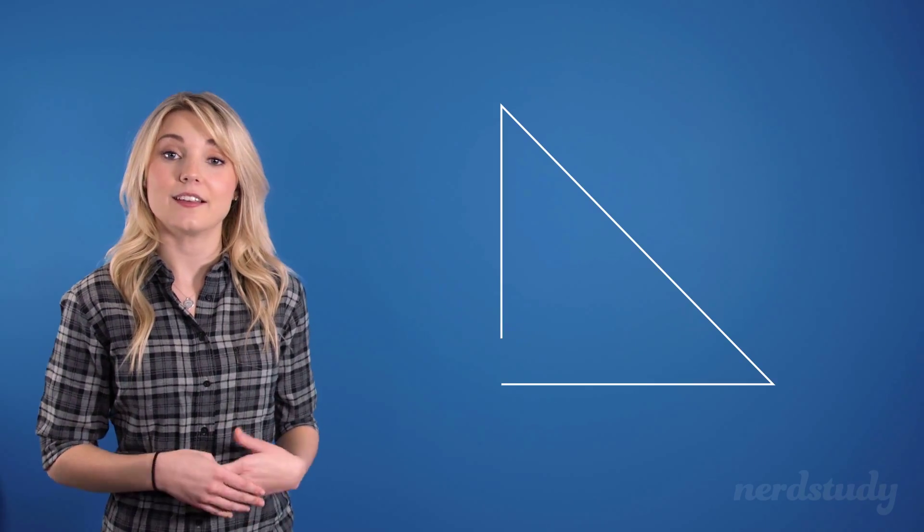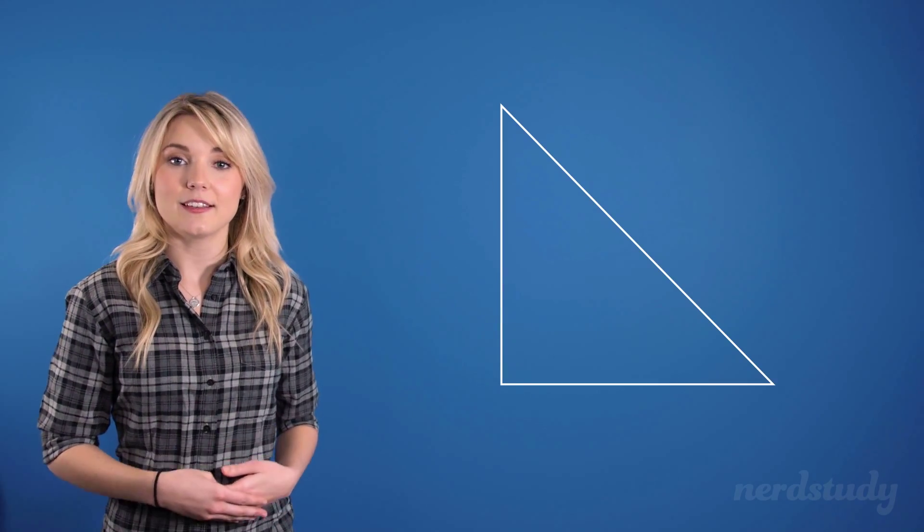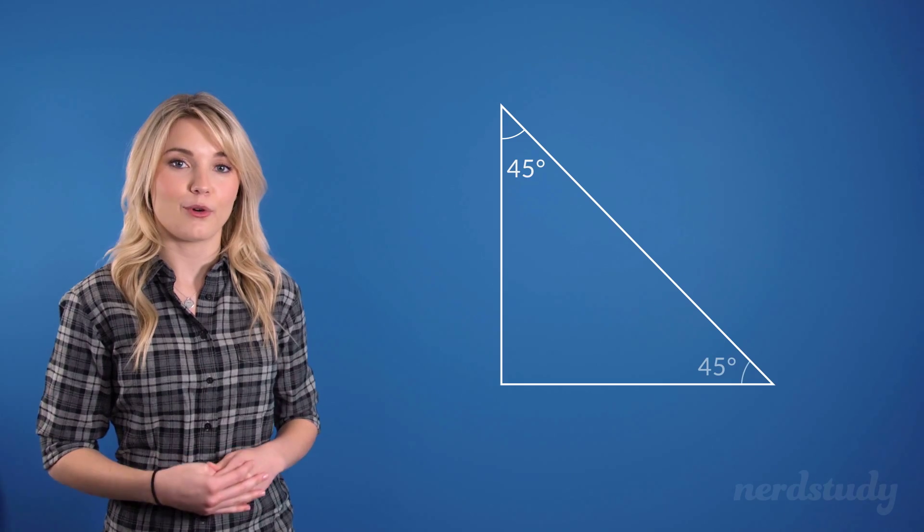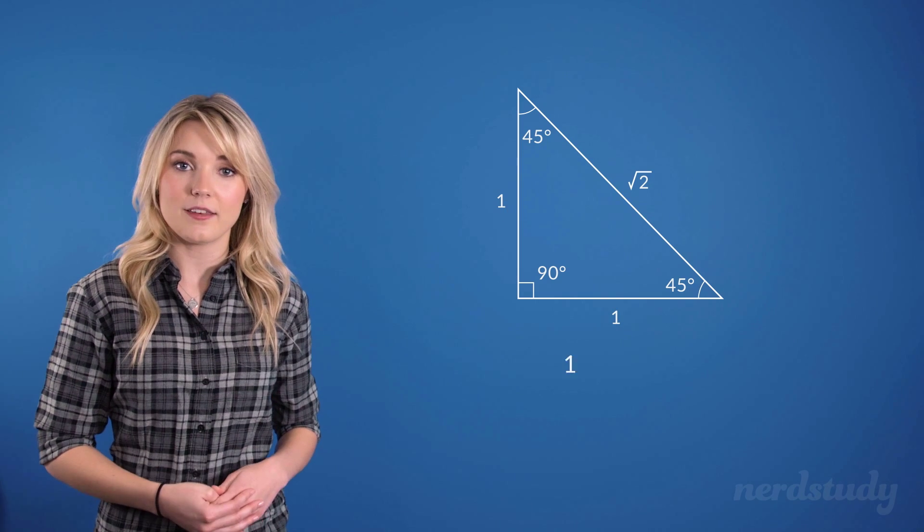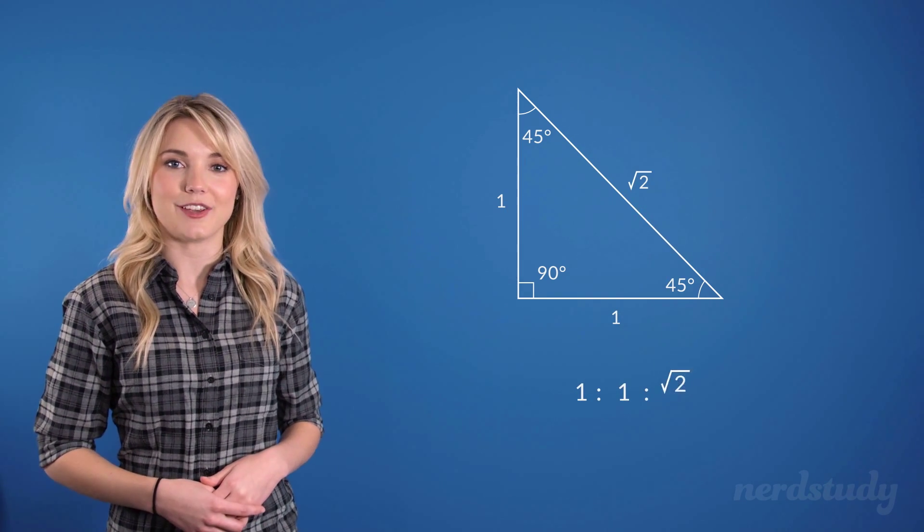The next special triangle we will look at is the isosceles triangle, which consists of angles 45, 45, 90. This triangle will have side length proportions of 1 to 1 to square root of 2.